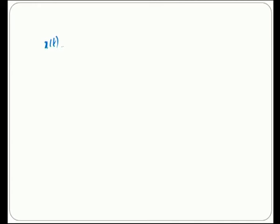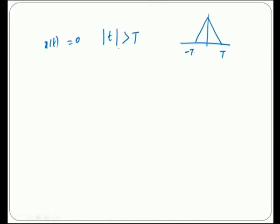Generally, the signal is represented as X of t. Suppose X of t is the non-periodic signal of finite duration. Then X of t is equal to 0 when the modulus of t is greater than T, where T is the time period. If X of t is a periodic signal, then it is represented as X of t plus t-naught, meaning the signal repeats with fundamental period t-naught.